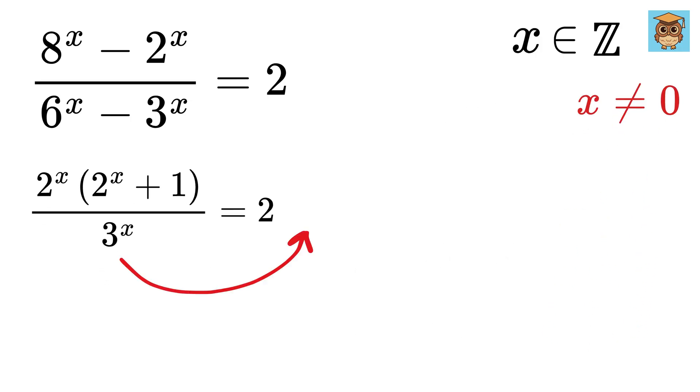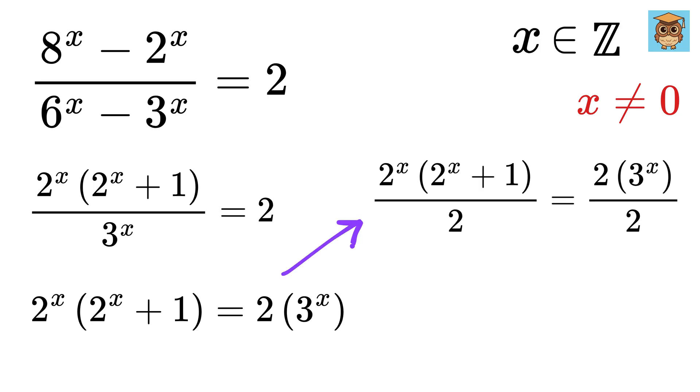Awesome! Now, take this 3 to the x here to get 2 to the x times 2 to the x plus 1 equals 2 times 3 to the x. Now, divide both sides by 2 to get this.